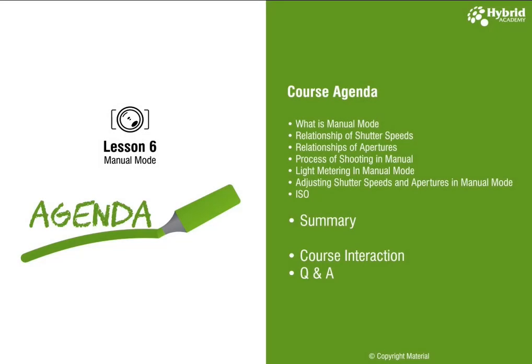In the sixth session we will learn: what is manual mode, the relationship of shutter speed and aperture, the process of shooting in manual mode, light metering in manual mode, adjusting the shutter speed and aperture in manual mode, and details on ISO. After this we will summarise everything and preview what comes in the next session. Please feel free to ask any queries in the comment box.